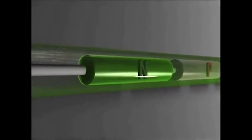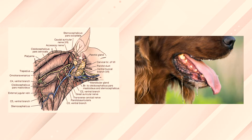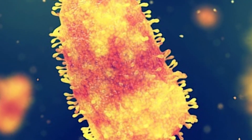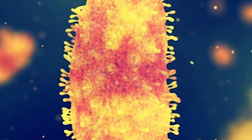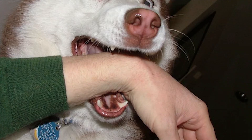The genome is linear, around 11 kilobases in length. The virus camps in the nerves and saliva of a symptomatic rabid animal, waiting for its next prey. The route of infection is usually, but not always, a bite.